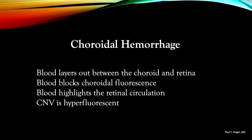Let's take a look at another choroidal tumor: choroidal hemorrhage. I'm sent a number of choroidal hemorrhages over the year to rule out choroidal melanoma. Choroidal hemorrhage is not a malignancy — it's just blood. However, some rare choroidal melanomas can also present with choroidal hemorrhage. In general, blood layers out between the choroid and the retina. That blood blocks choroidal fluorescence and highlights the retinal circulation, much like RPE hypertrophy. Any CNV that is synchronous with the choroidal hemorrhage, or may even be etiologic, is hyperfluorescent.